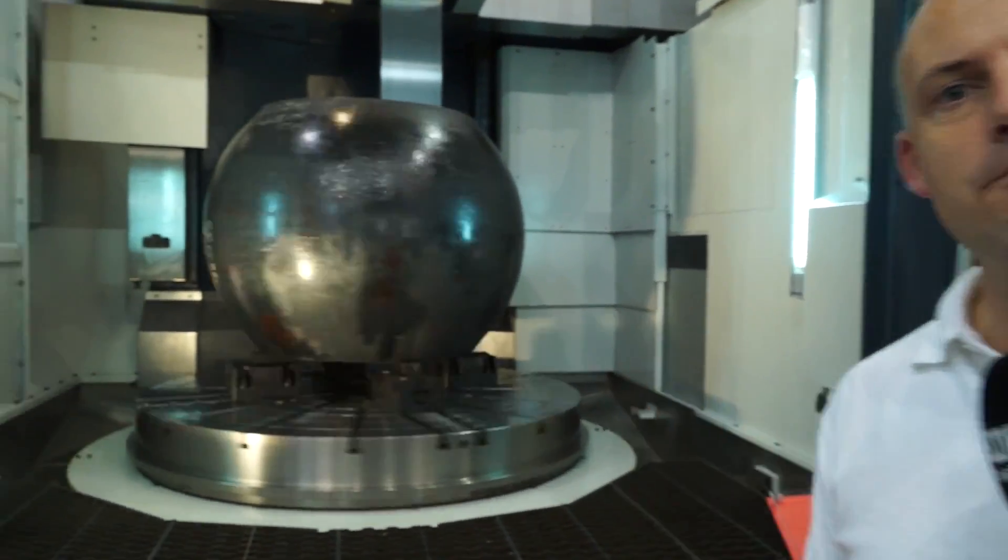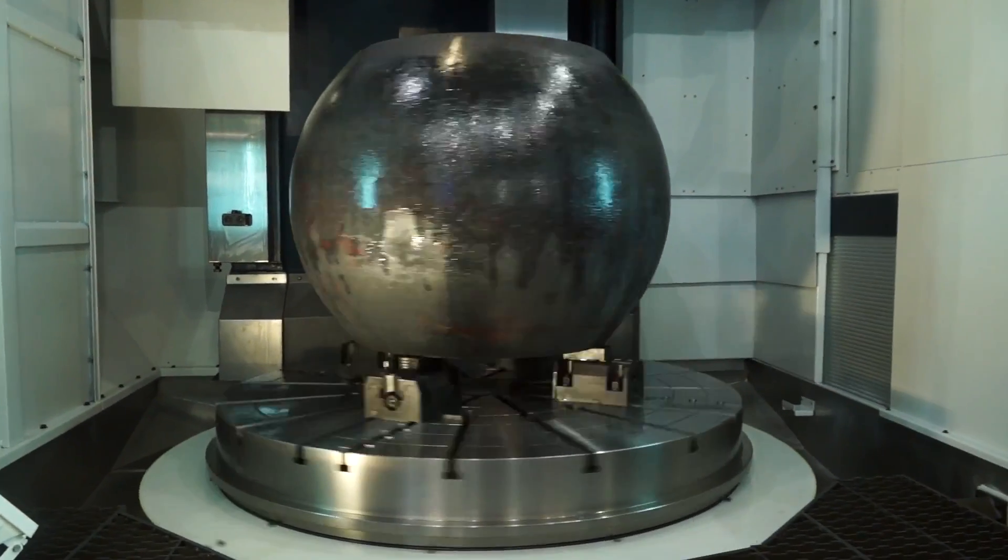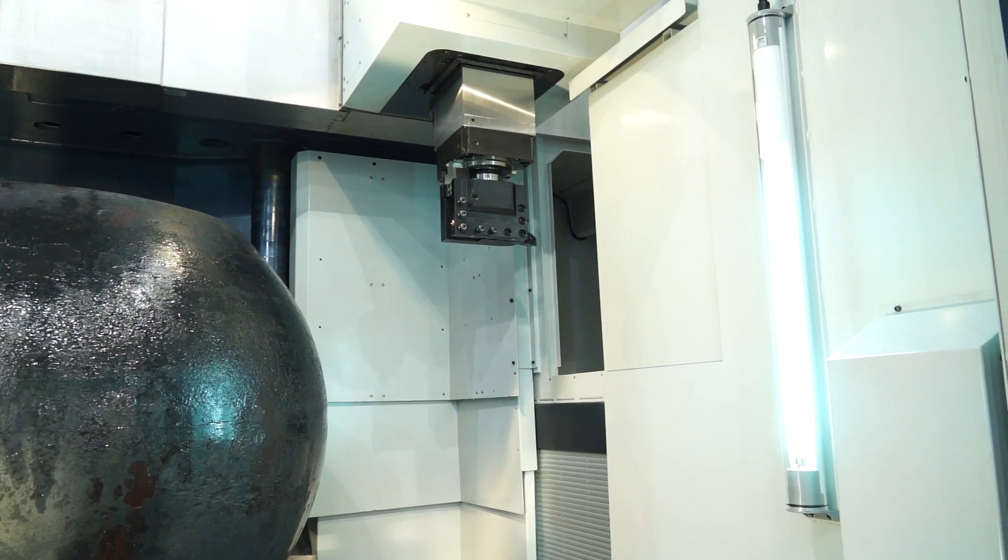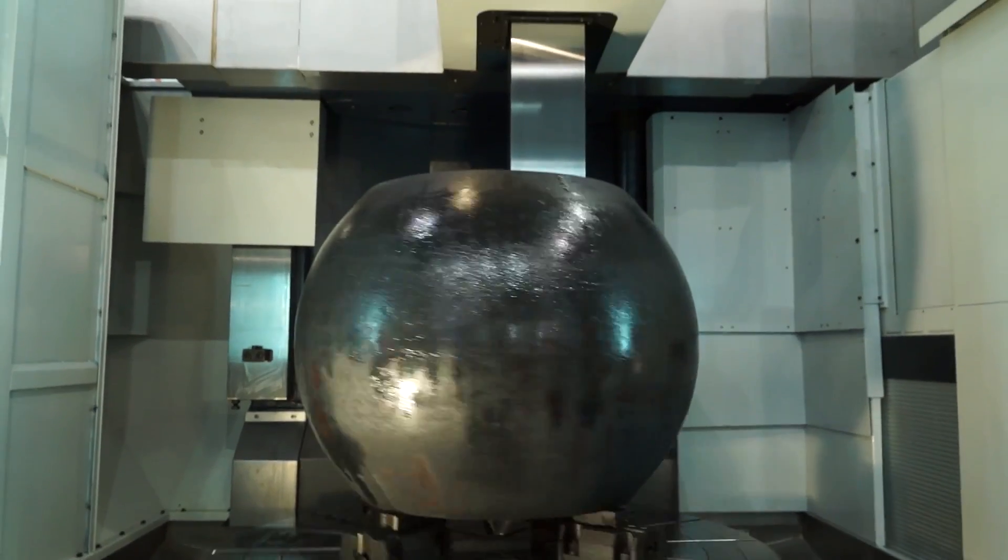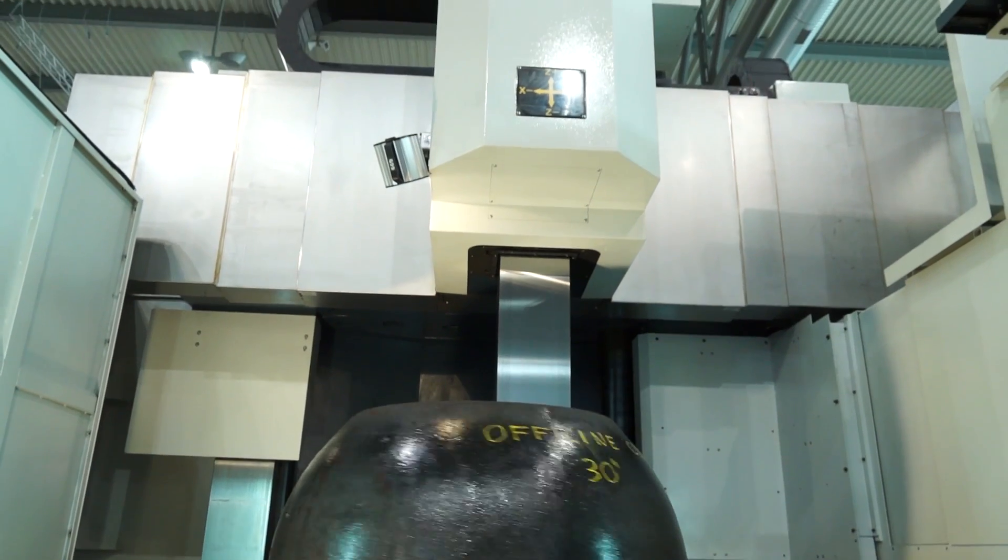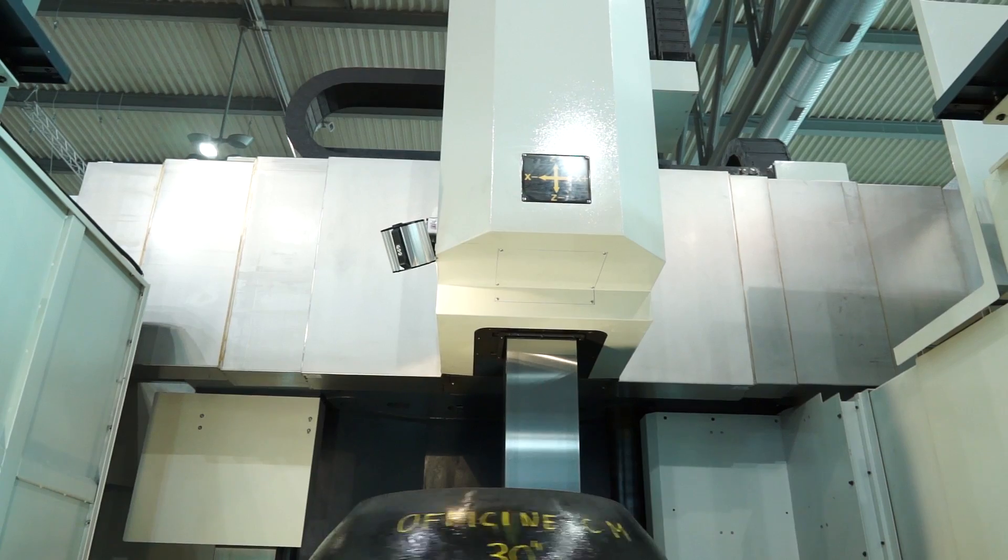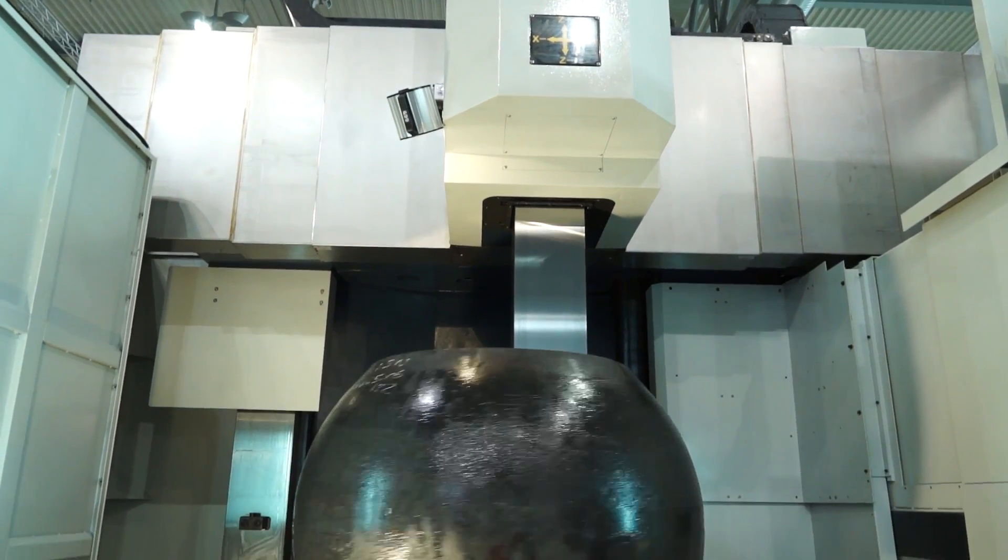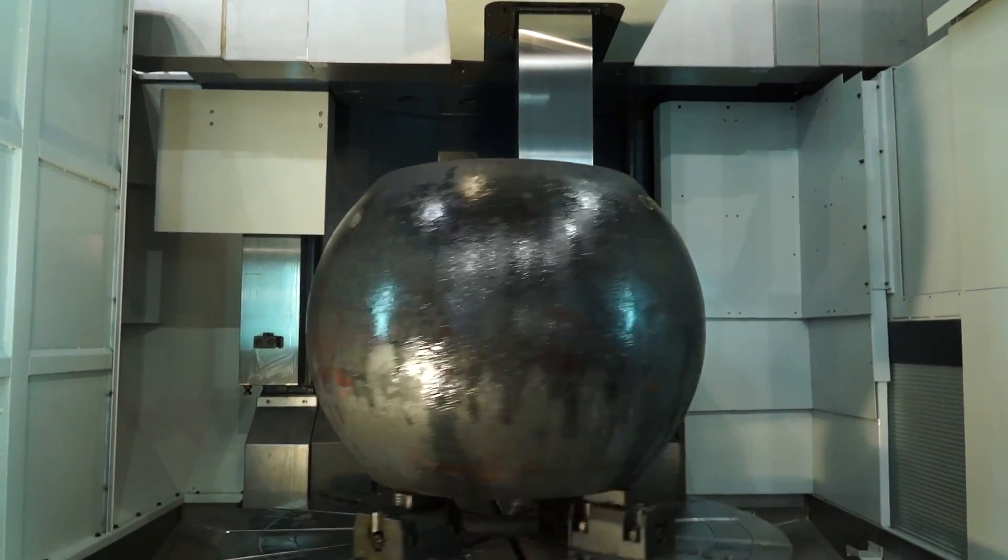The key thing about this machine is it is a vertical lathe but it's also got milling capability in the form of a tool changer. Now the capacity of this machine, the table diameter is actually 1600 millimeters. The turning diameter or the max swing is 2 meters but you can turn up to 1800 millimeters in diameter.